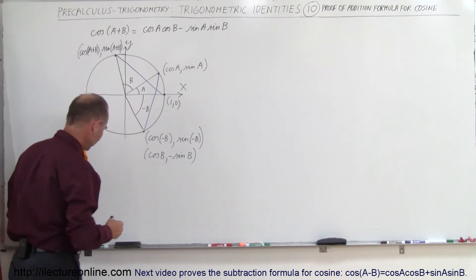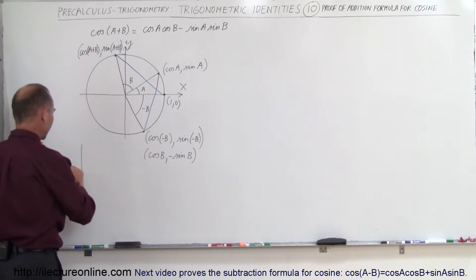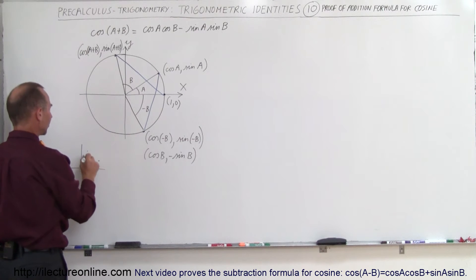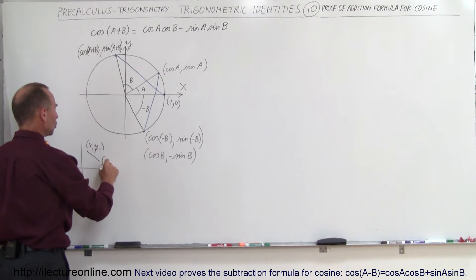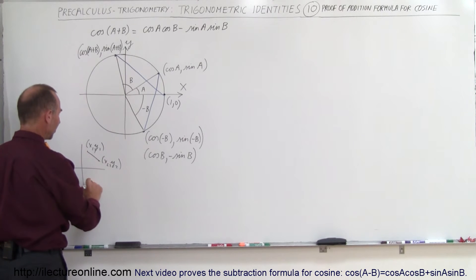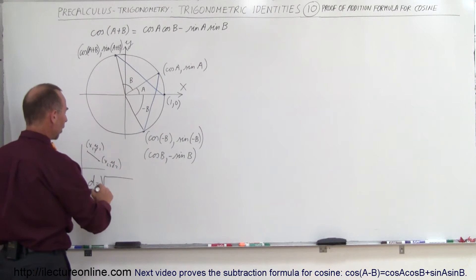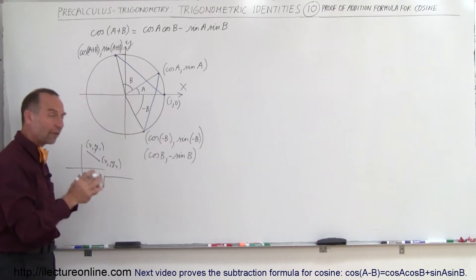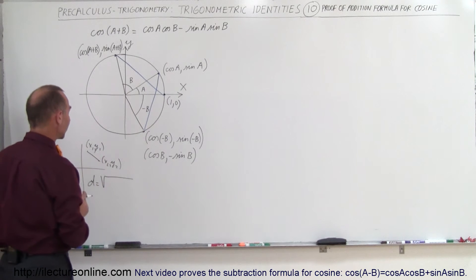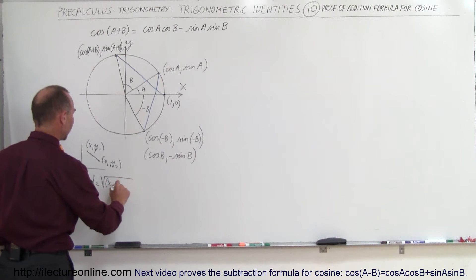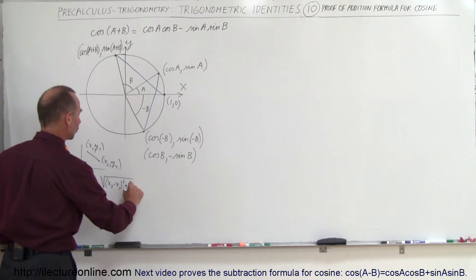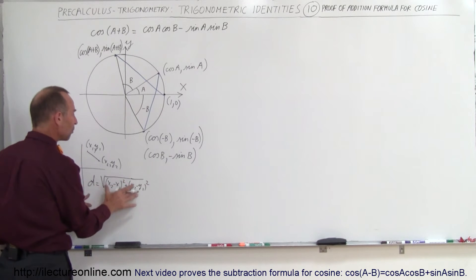We can find the length of those chords using the distance formula. If we have two points on the xy-axis — x1, y1 and x2, y2 — the distance d equals the square root of the quantity x2 minus x1 squared, plus the quantity y2 minus y1 squared. We'll use the same principle here with our coordinate points.